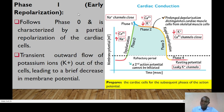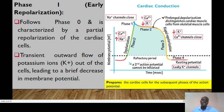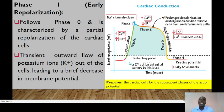Phase 0 ushers in phase 1, which is early repolarization. Phase 1 follows phase 0 and is characterized by a partial repolarization of the cardiac cells. There is a transient outflow of potassium ions out of the cells, leading to a brief decrease in membrane potential.